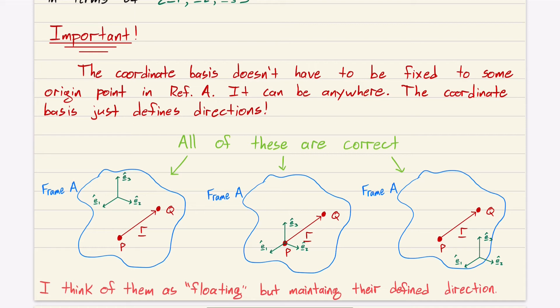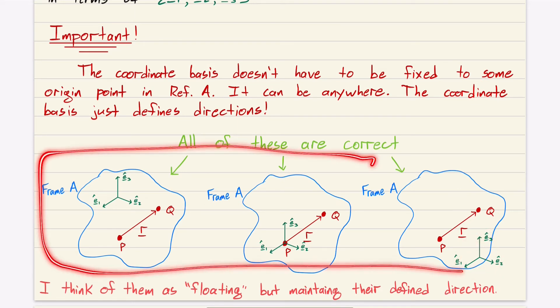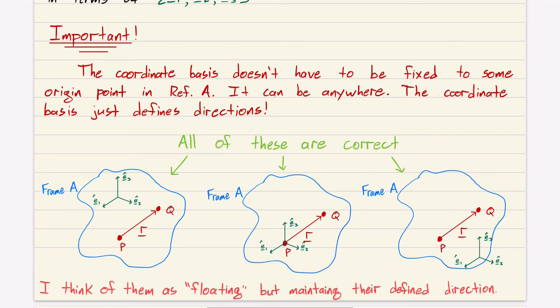Important. The coordinate basis doesn't have to be fixed to some origin point in its reference frame. It can be anywhere. The coordinate basis just defines directions. I see a lot of people get it in their head that they have to put the coordinate basis at some origin. You don't. You could have the coordinate basis over here, at point P, or over here. These are all the same thing. All of these are correct.